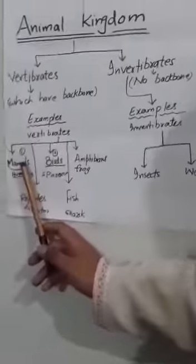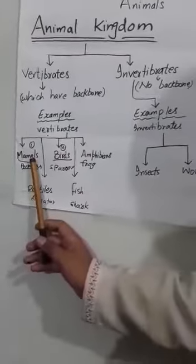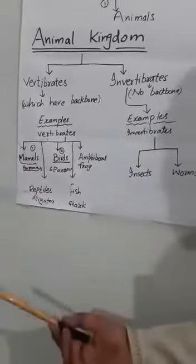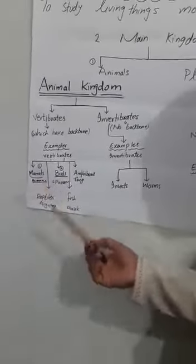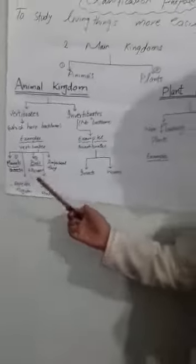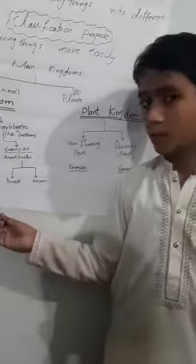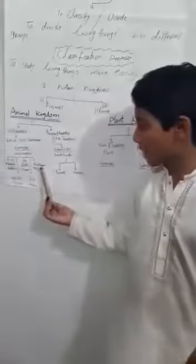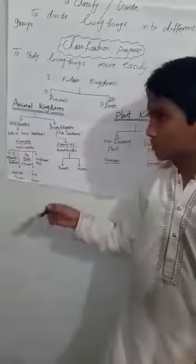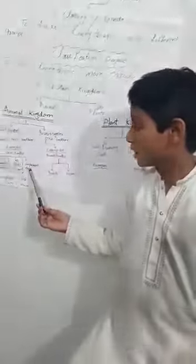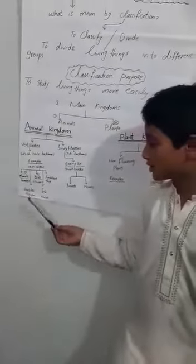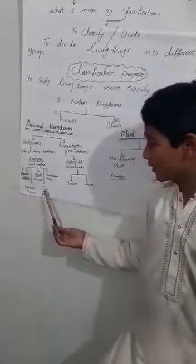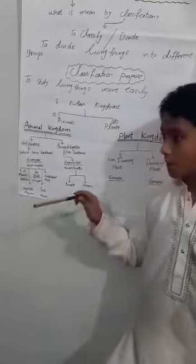There are five examples of vertebrates. The first is mammals — mammals include humans. The second is birds. The third is amphibians, which also live in water, like frogs. The fourth is reptiles, which crawl on the ground, like alligators. The fifth is fish, which live in water.